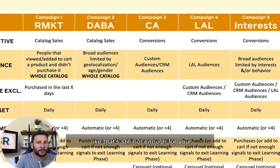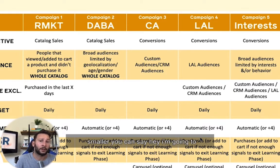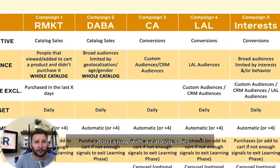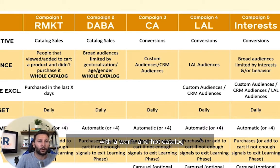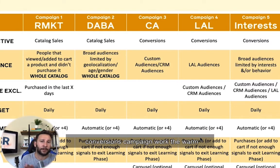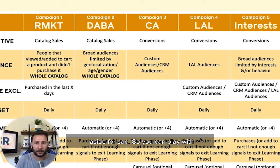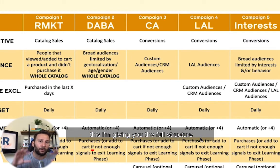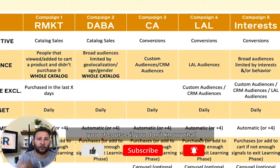If you feel that's still not enough for your budget, you can start even smaller. You can say, I'm going to start only with a catalog sales campaign to see what sticks and what people want, and then maybe start with a warm and hot catalog campaign. Those are two campaigns to run, or add a third and leave the warm conversions campaign aside for now. So you can play with this — I'm giving you the full structure and then you can decide what's best for you.